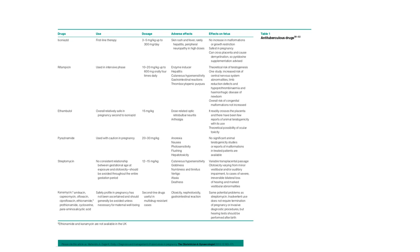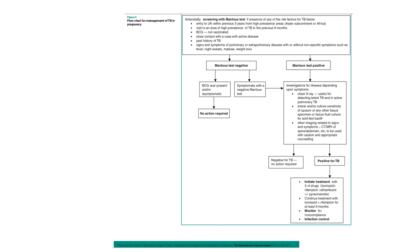Anti-tuberculosis drugs include isoniazid, rifampicin, ethambutol, pyrazinamide, streptomycin, and kanamycin, with information on dosage, adverse effects, and effects on the fetus. The management flowchart for TB in pregnancy: if the Mantoux test is negative, BCG scar is present, and the patient is asymptomatic, no action is required. If the Mantoux test is negative but the patient is symptomatic, or if the Mantoux test is positive, investigations should be performed including chest X-ray, smear, culture, and other imaging such as CT or MRI. If investigations are negative, no action is required; if positive, initial treatment with 3–4 drugs is commenced with monitoring for non-compliance and infection control.